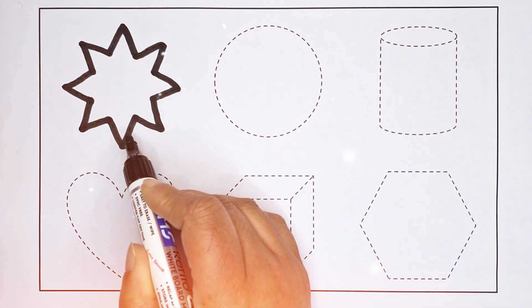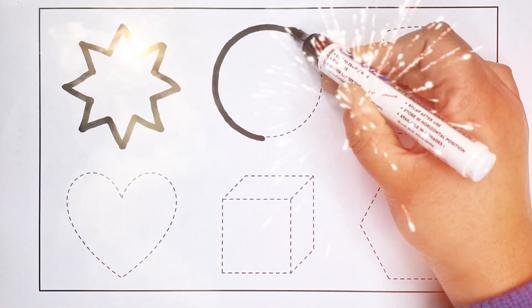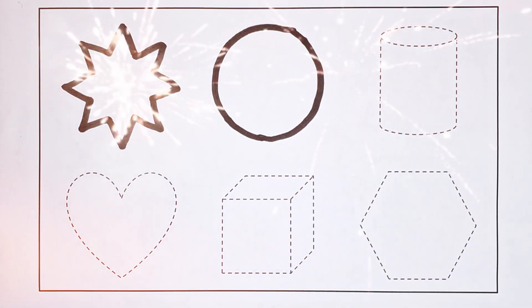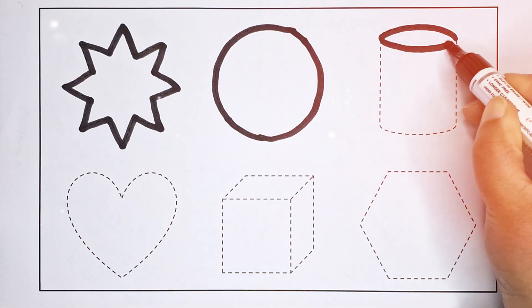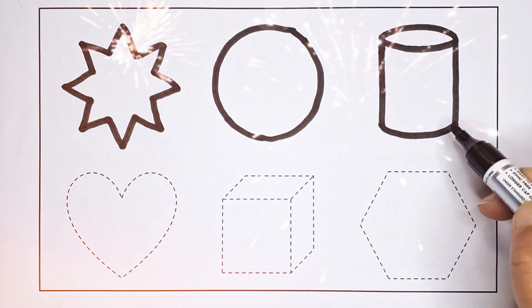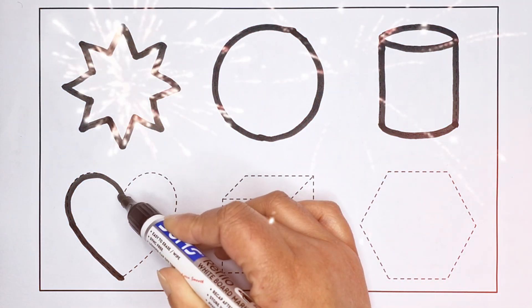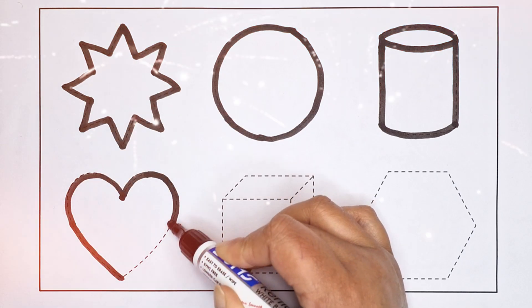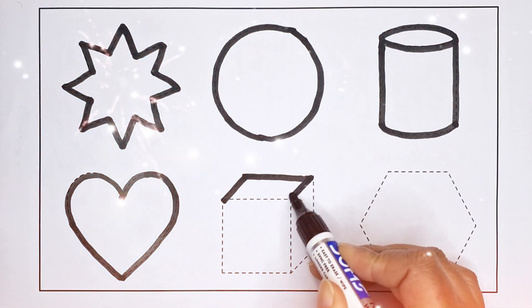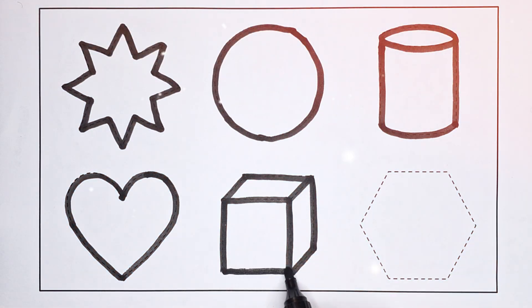Eight-Point Star. Circle. Slender. Heart. Cube.